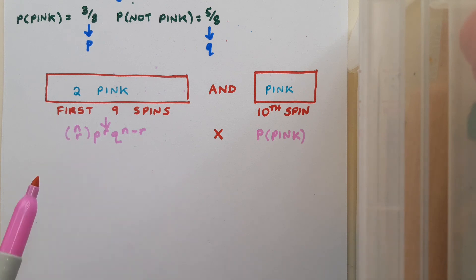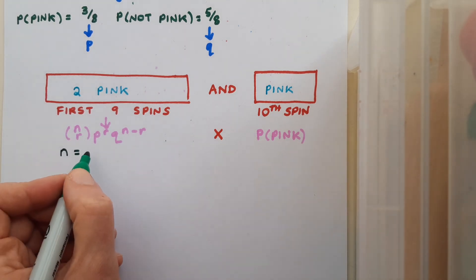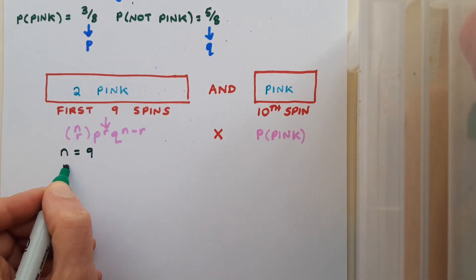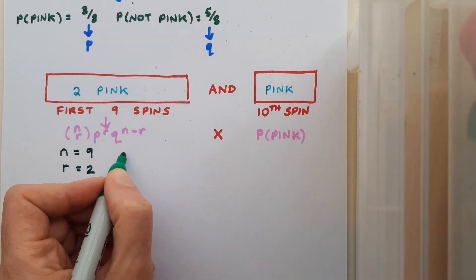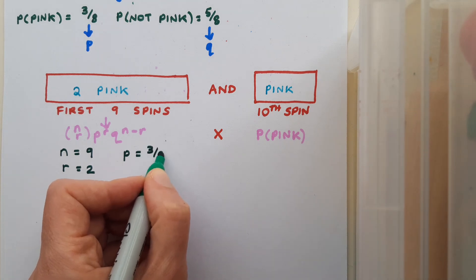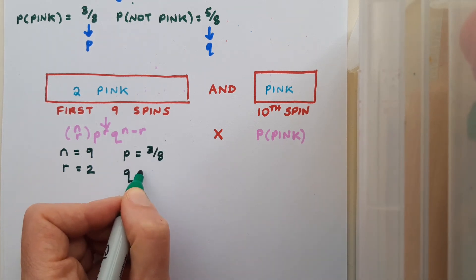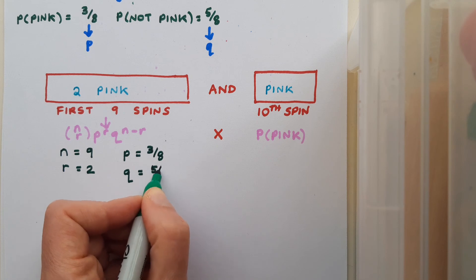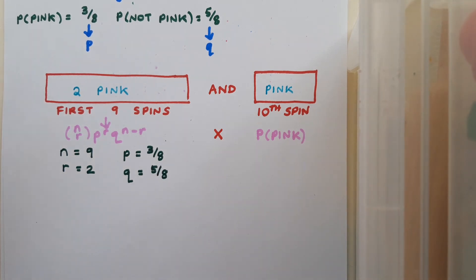Before I begin to fill out the formula, I'm going to just list out my values. So in this case, n is going to be nine, because I want to have nine spins. I want to get pink twice, and pink is my success, which is a probability of three over eight. And anything except for pink is a failure, and that is five over eight. And I had mentioned these previously up here on the page. So we're going to fill that in now.